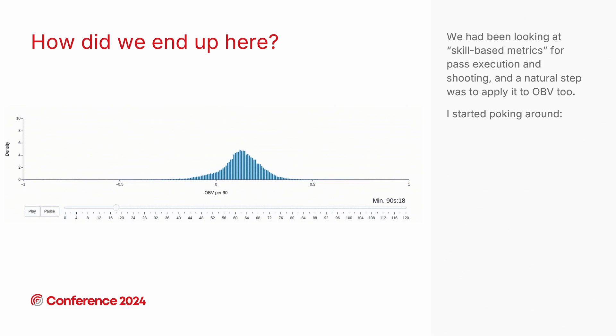This kicked off when we were looking at building some stuff on top of our current OBV model. I made this little animation that just increases a 90s threshold to try and figure out when this distribution stabilizes. But I noticed that it's not centered at zero and I had this thing in my head that it should be. So I thought I'll go off and check why I think that, see if my intuition is correct there and just poke around a little bit.